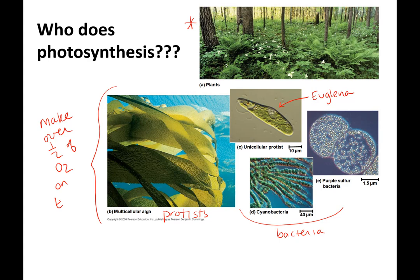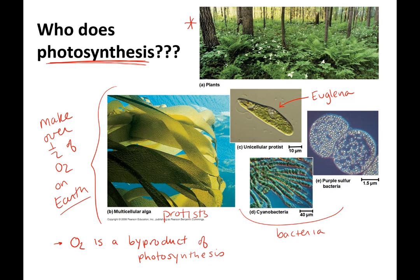Oxygen is a byproduct of photosynthesis. It is not the reason for photosynthesis — it's like a waste product. Just like we talked about CO2 being a waste product in cellular respiration, oxygen is actually a waste product in photosynthesis. The purpose of photosynthesis is to make food or sugar for the plant.